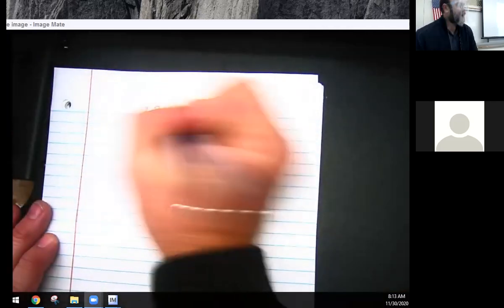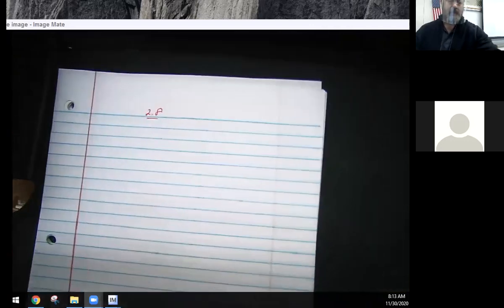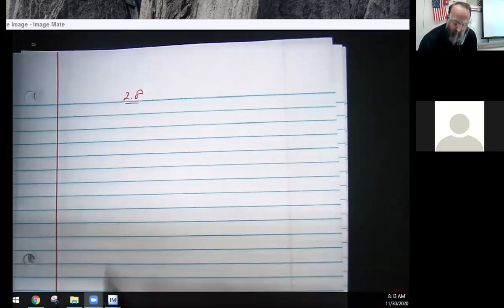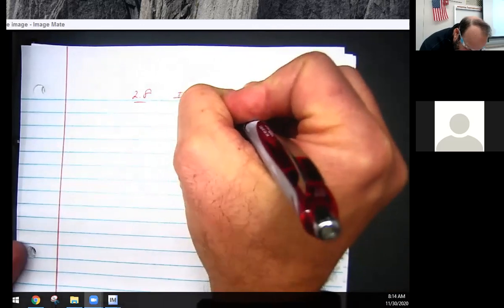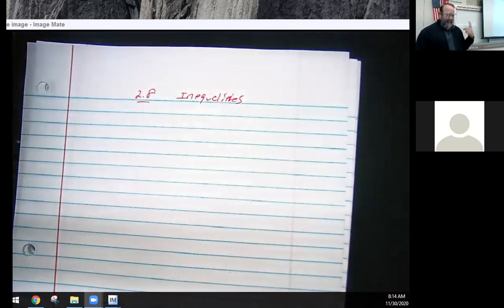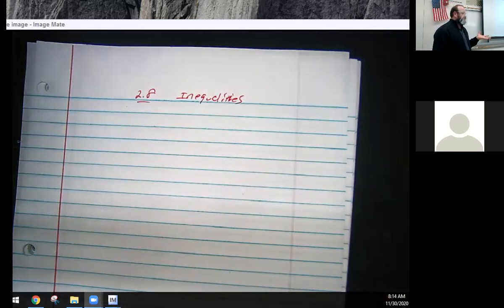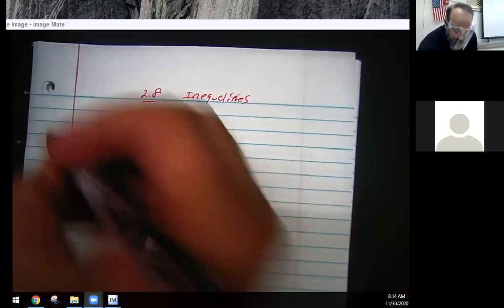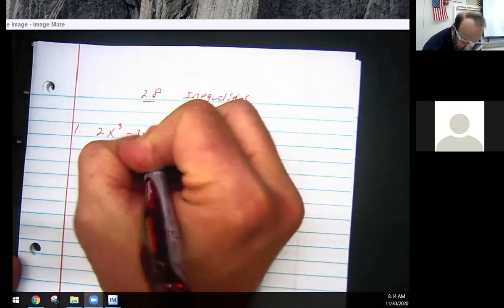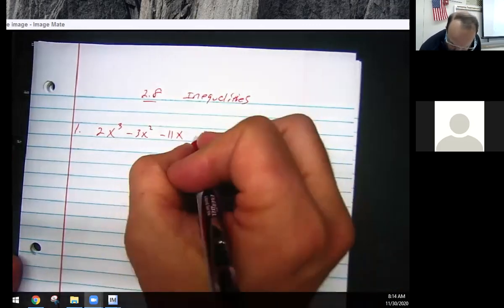So today we're going to be dealing a little bit with just some inequality. I'm going to call this 2.8. You guys might want to write this down. This section deals with inequality. We've been dealing over the last five weeks with problems where we set things equal to zero, didn't we? The only difference now is we're going to make it greater than zero, less than zero, greater than or equal to zero, or just plain not zero. I'm choosing not to put this particular topic on the test, but I do think some of this is going to work to our benefit in reviewing for the test.